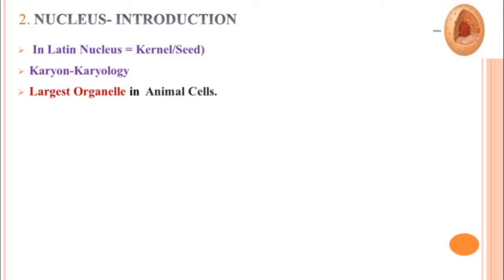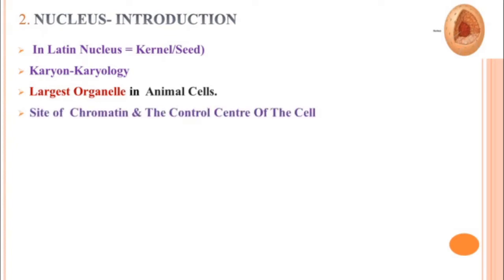Nucleus means kernel or seed in Latin. It is also known as karyon. The study of nucleus is called karyology. It is the largest cell organelle in animal cells, whereas in plants, plastids are the largest. It is a site of chromatin. By having all the genes, it can control the metabolic activities taking place in each and every cell organelle. So, it is the control center of the cell.